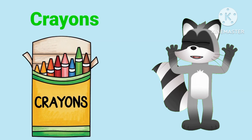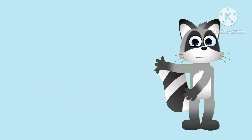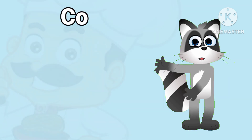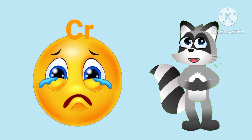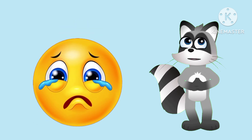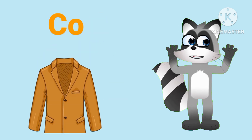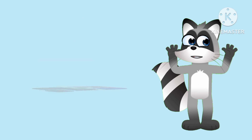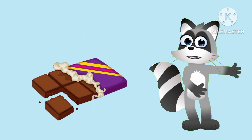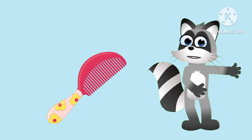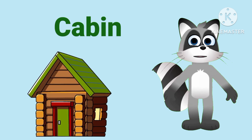C is for carrots. C is for colors. C is for cook. C is for cry. C is for cut. C is for coat. C is for chocolate. C is for comb. C is for cabin. C is for clock.